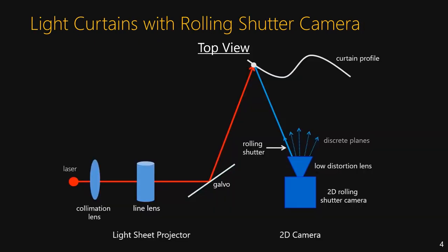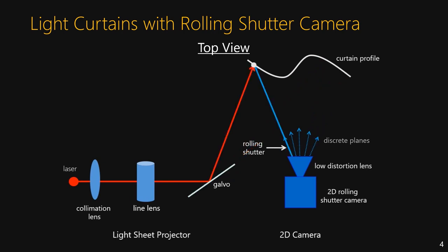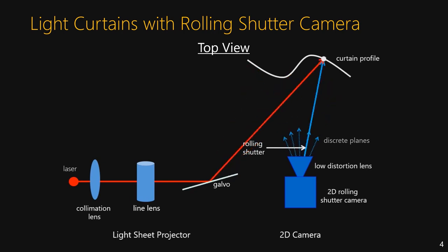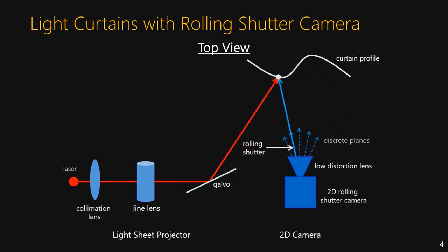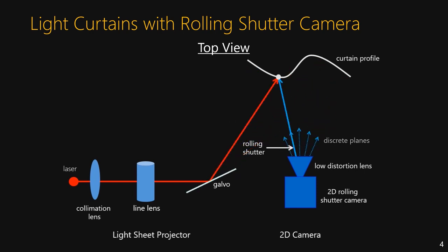To capture light curtains, we use a laser and line lens to create a sheet of light that is steered by a galvomirror and imaged by a rolling shutter camera. The galvomirror rapidly moves to steer the light sheet in sync with the progression of the rolling shutter across the pixel columns to capture the light curtain. This enables capturing of light curtains at the full frame rate of the camera. By syncing the galvomirror with the progression of the rolling shutter, the point on the curtain can rapidly be changed and an entire curtain is captured in a single camera frame.